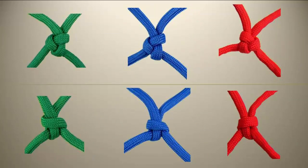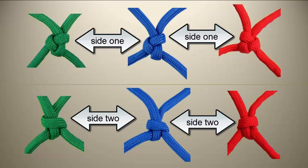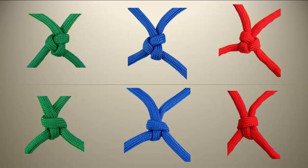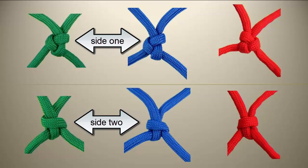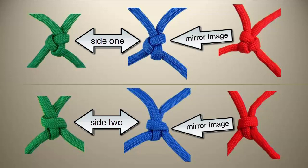The netting knot has two distinct looking sides. If you compare the similar looking sides of the netting knots, you will notice that the knots in the green and blue netting look the same, while the knots in the red netting are mirror images of the knots in the green and blue netting.